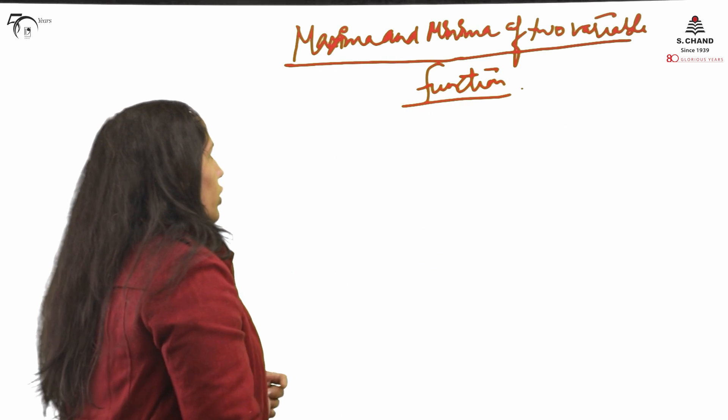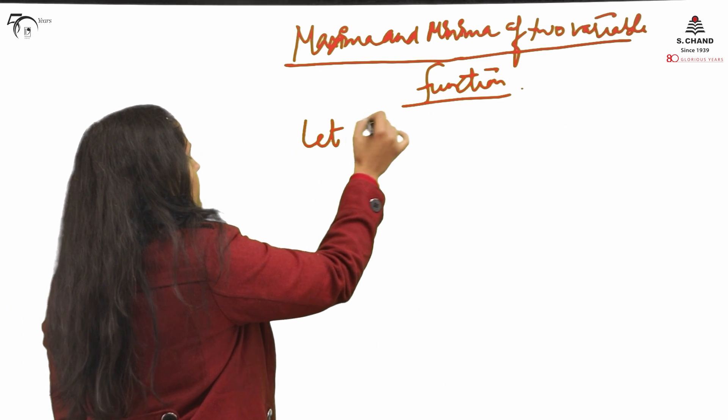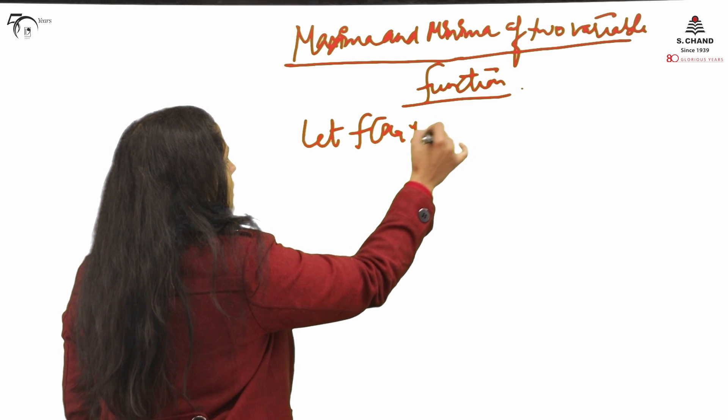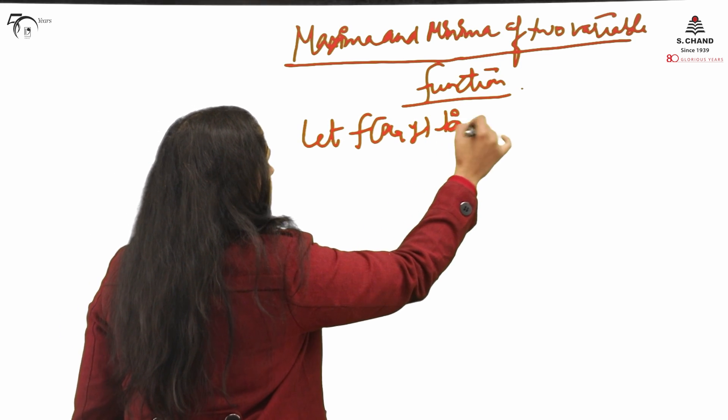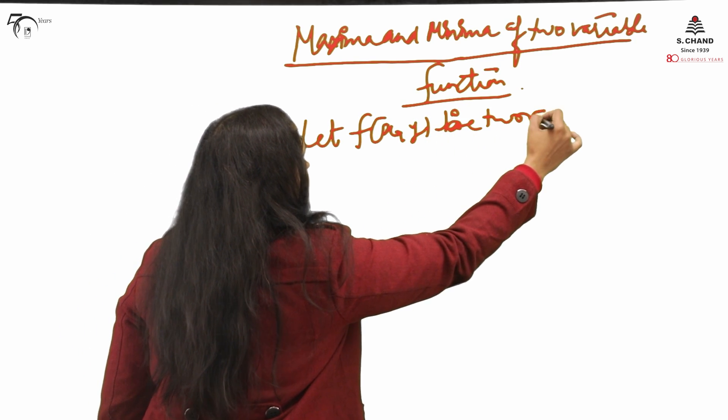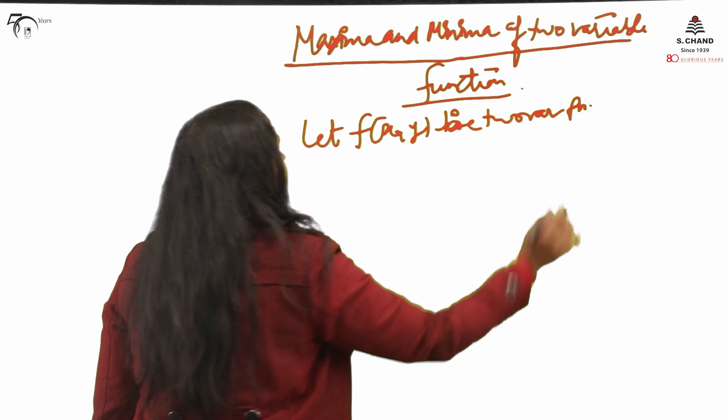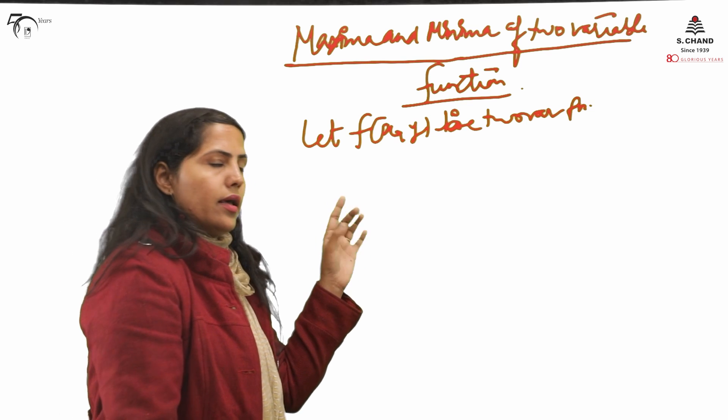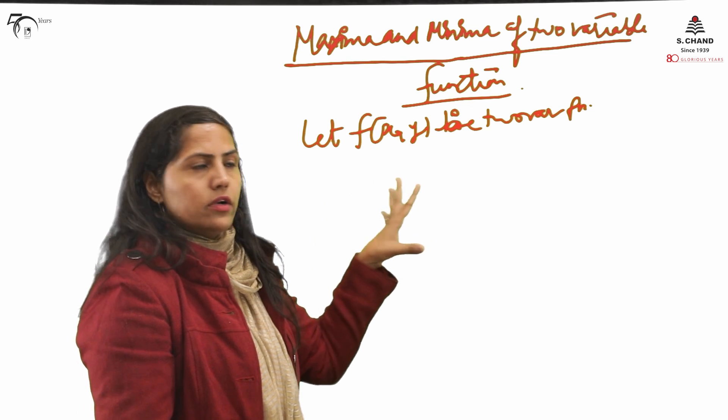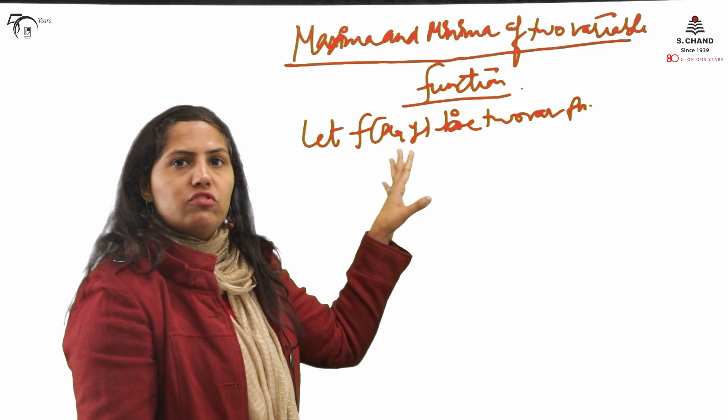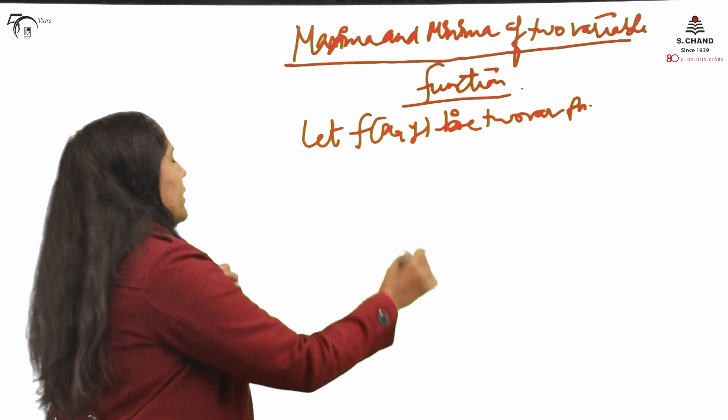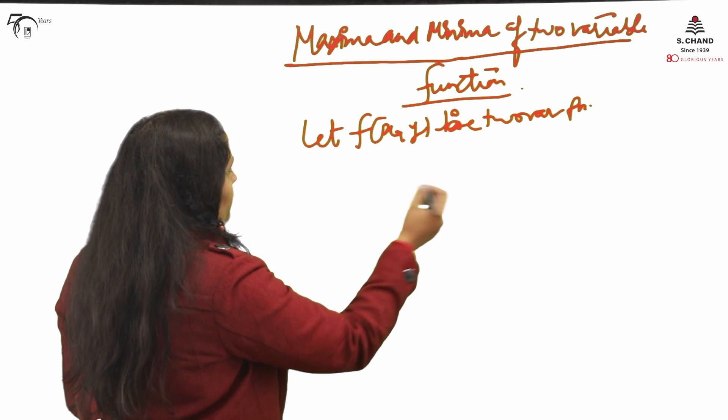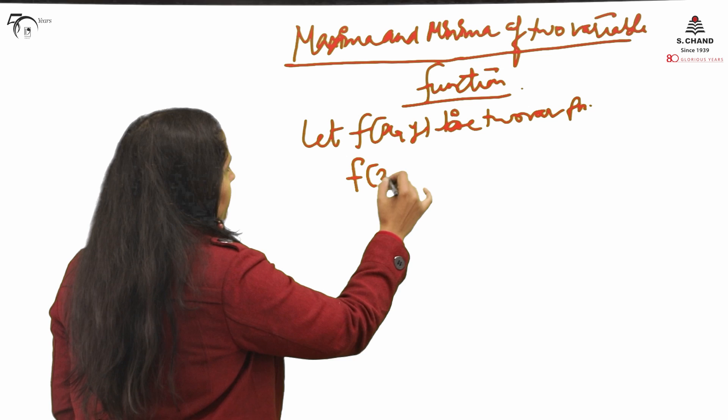If it is for two variable, let f(x,y) be a two variable function. The concept we have already learned in our last lecture: how to find partial derivatives. This is totally based on partial derivatives and what to do, how to proceed. So f(x,y) will be given to us.